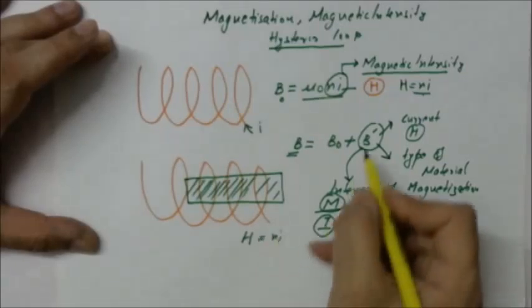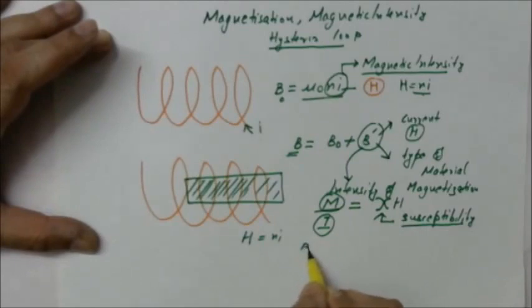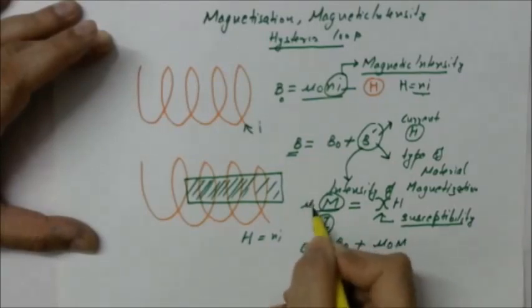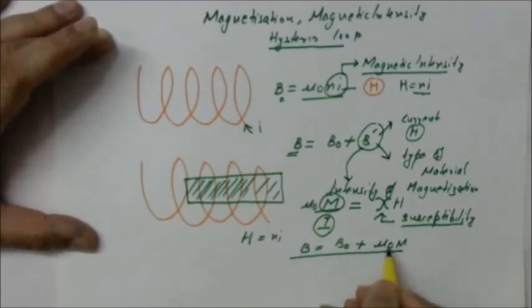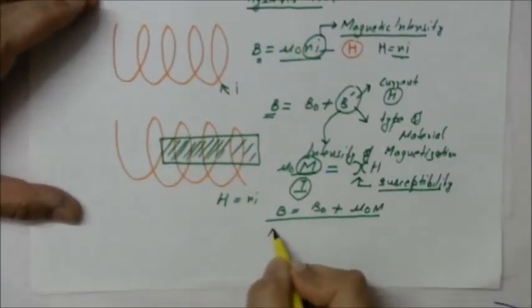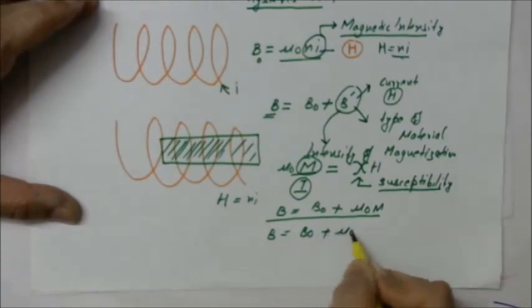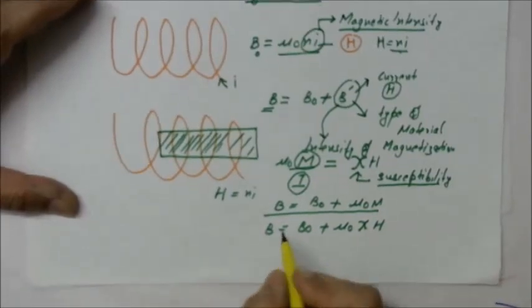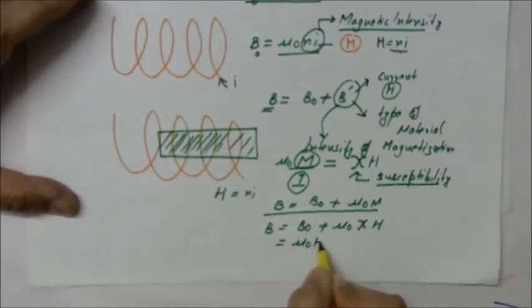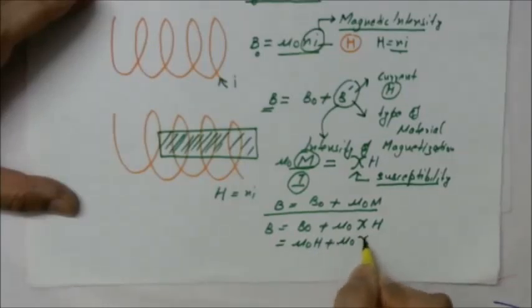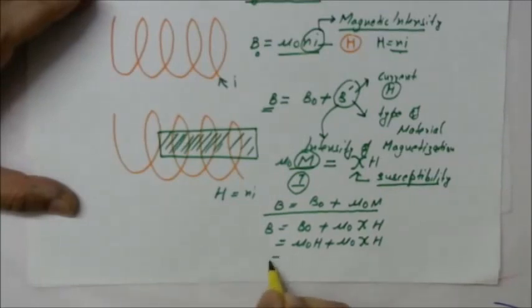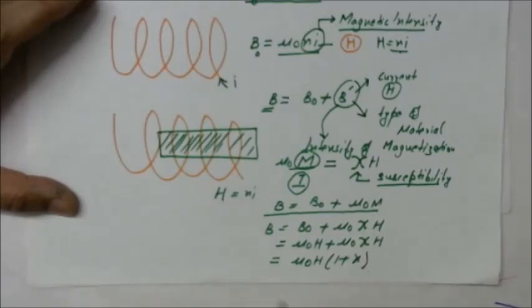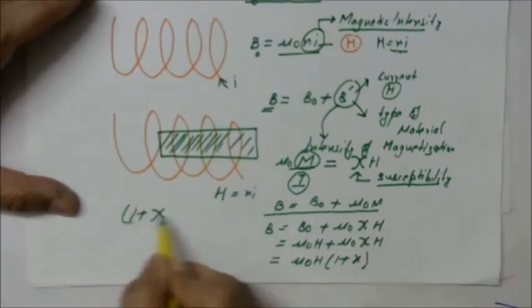H is equal to nI, and when we place the material we write B equals B₀ plus μ₀M. So the equation becomes B equals B₀ plus μ₀χH. Since B₀ was μ₀H, it becomes B equals μ₀H plus μ₀χH, which gives B equals μ₀H times (1 plus χ). This term (1 plus χ) is also called relative permeability.